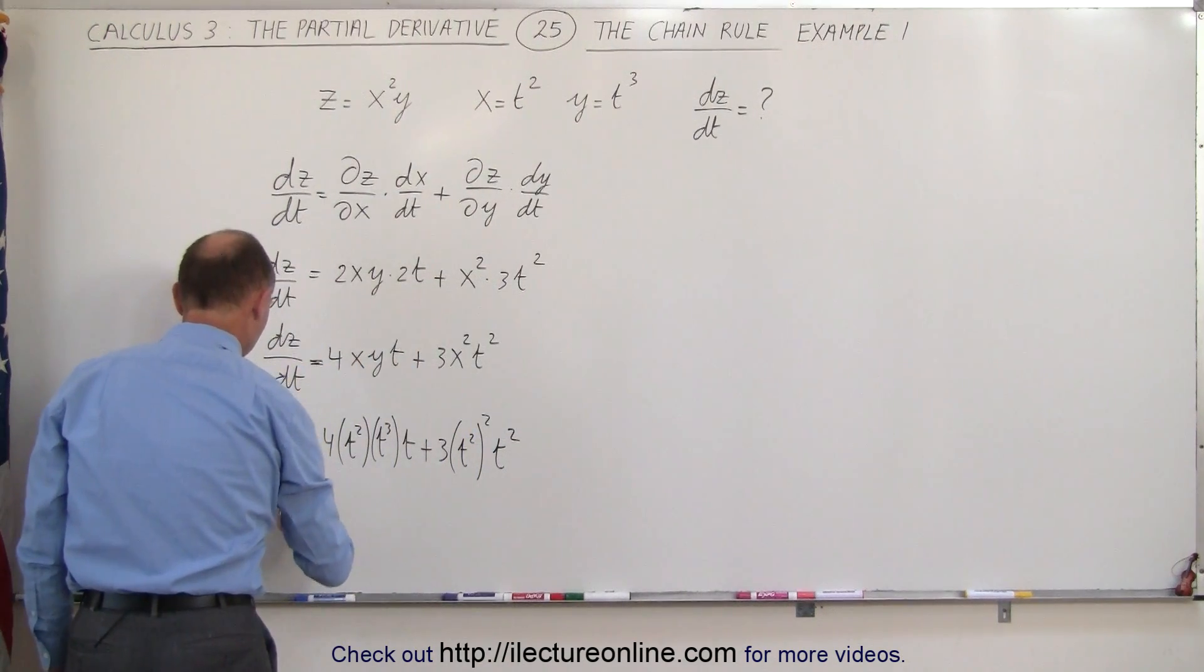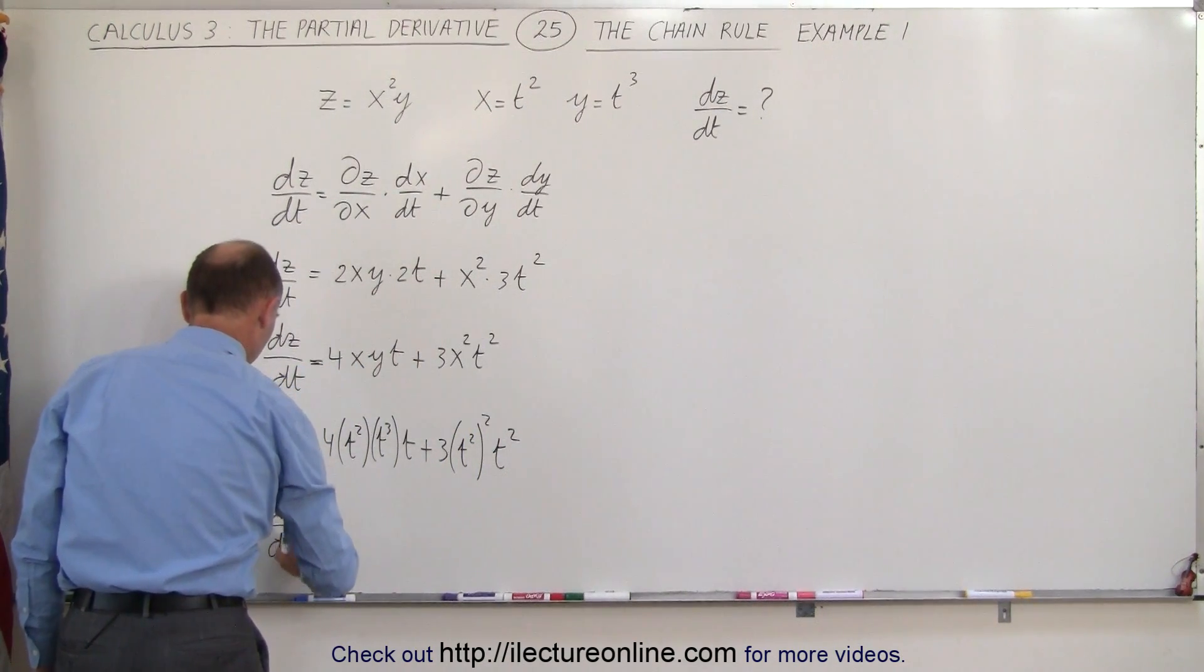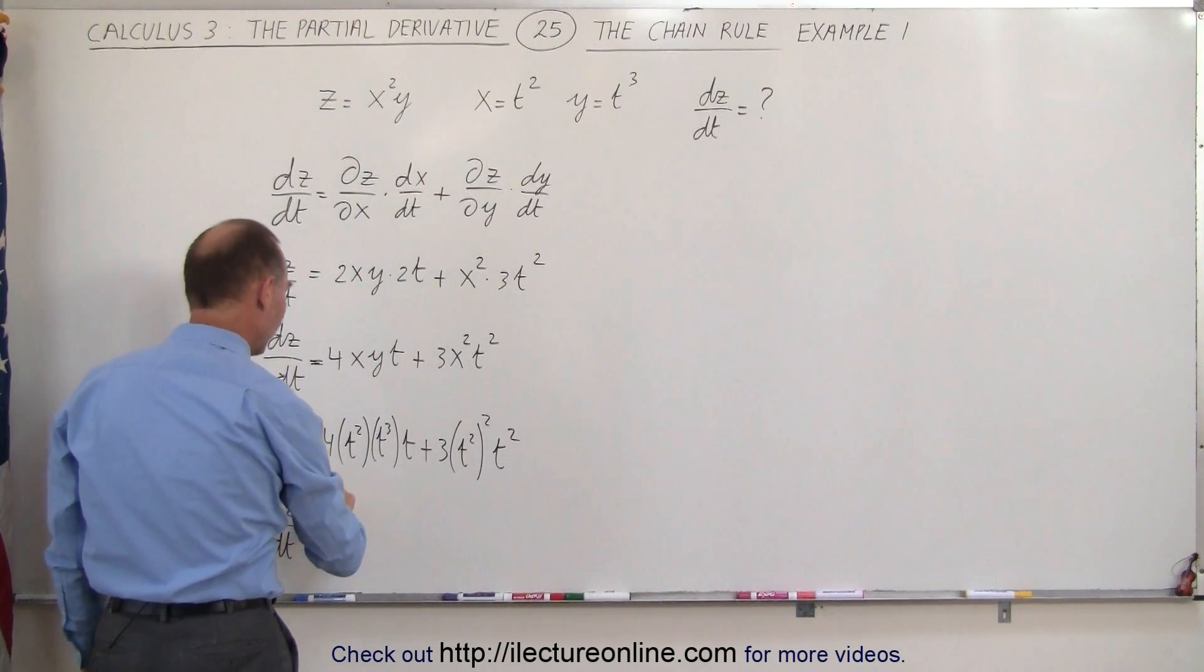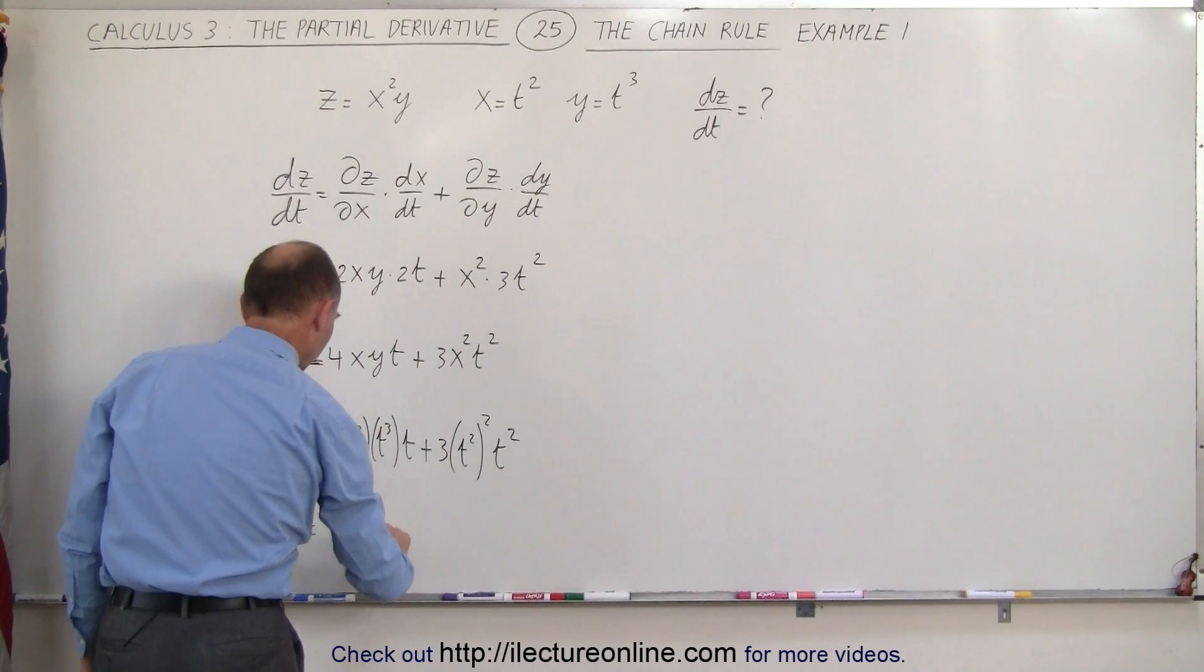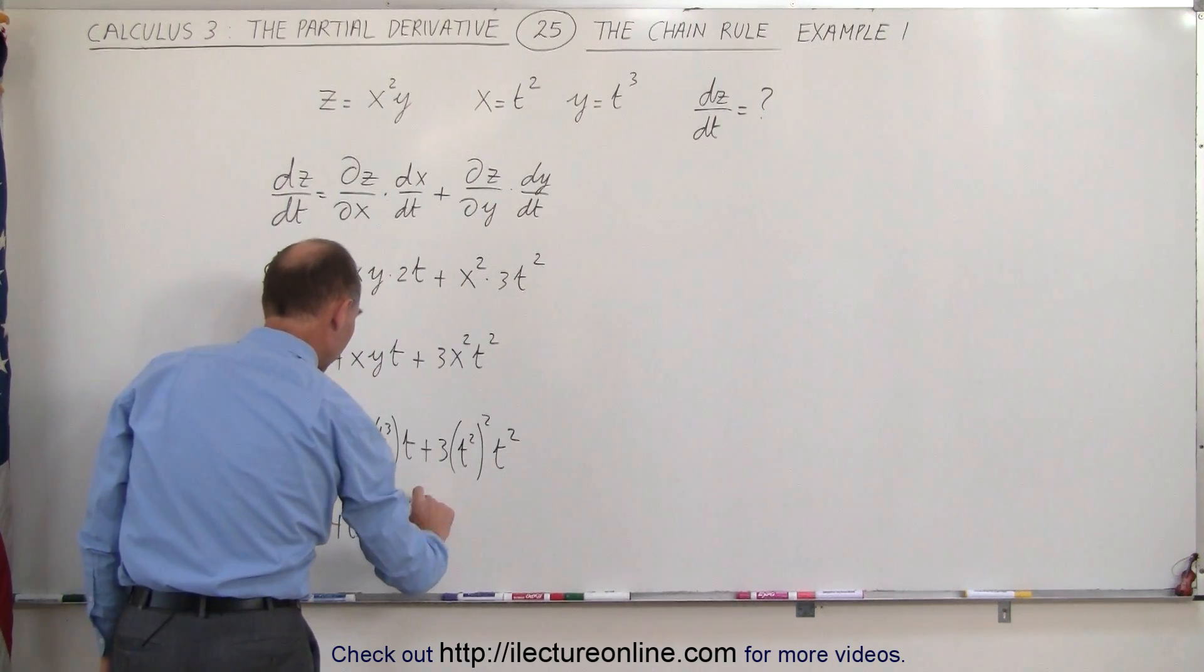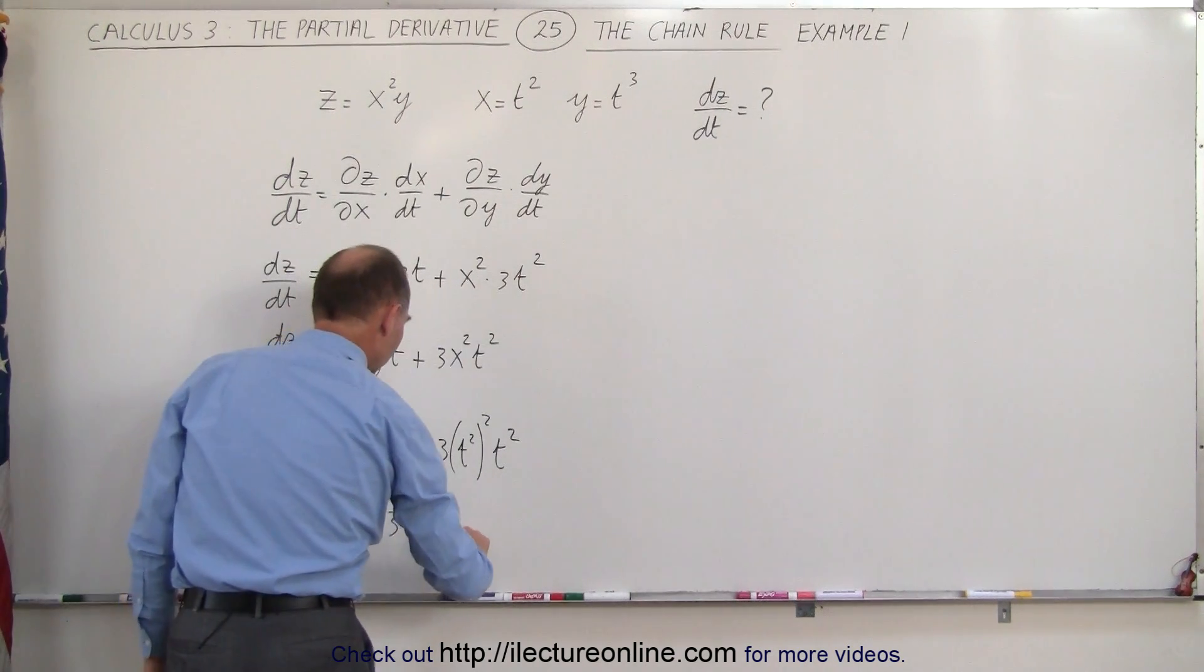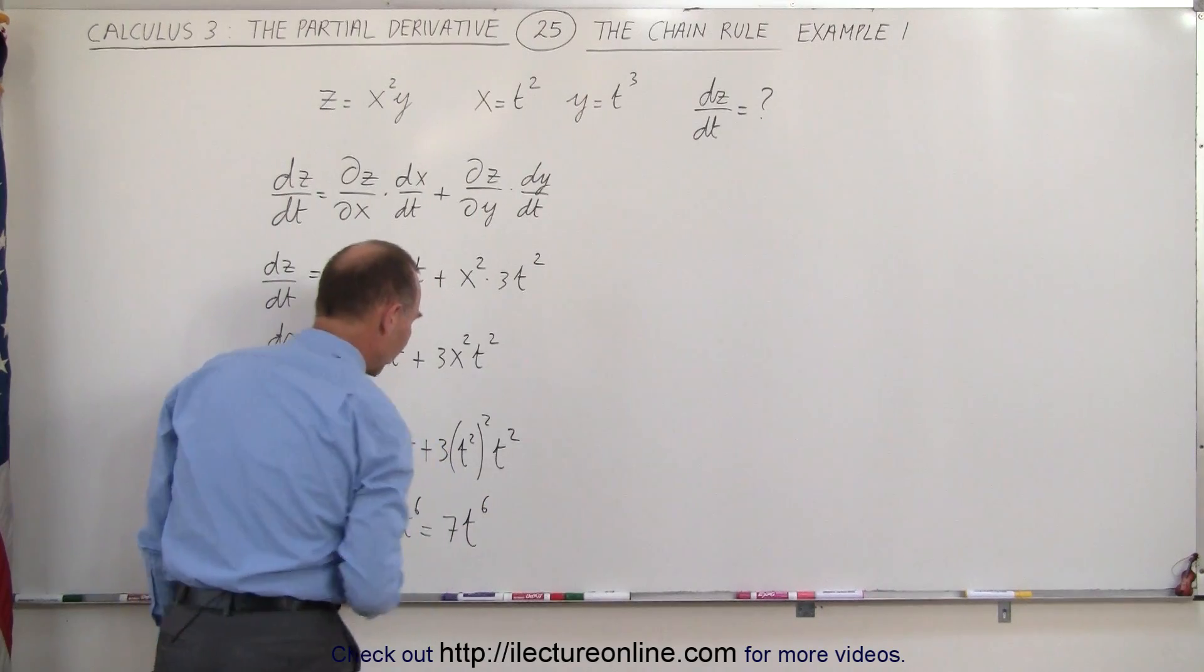which means that dz dt is equal to 4t to the sixth plus 3t to the sixth, which is equal to 7t to the sixth.